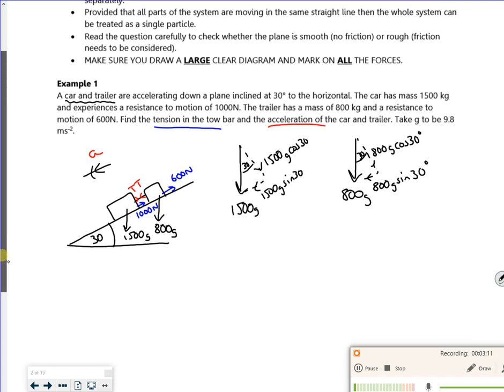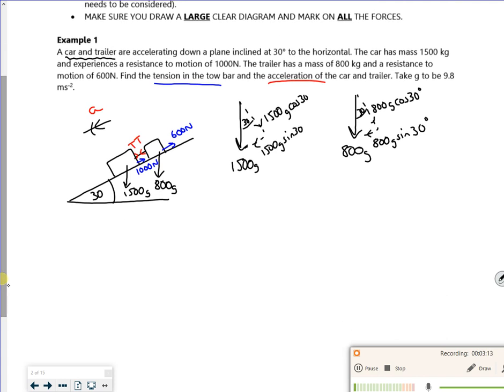Let's have a look parallel to the system then. Now your tensions actually cancel out. So let's have a look parallel. When we did it last year, we lumped it together. Now we can do that, we could lump it together as a single particle, and that would just work out the acceleration for us because our T values will cancel anyway. So I'm going to do F equals ma. So I'm looking, what's running down the slope minus what's stopping us going down the slope is equal to mass times acceleration.